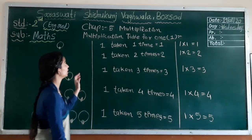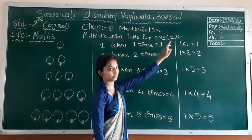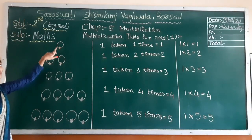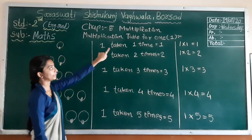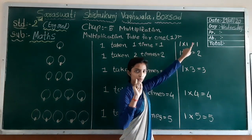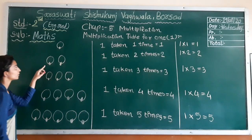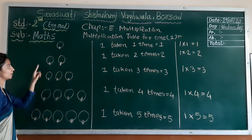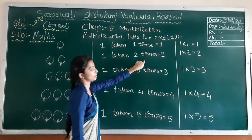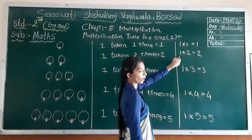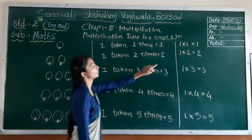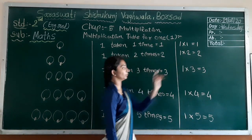Now students, we will learn the multiplication table for one. See here students, this is the table of multiplication. I have taken one object one time. One taken one time equal to one. One multiplied by one equal to one. Here I have taken one object two times — one time, two times. That means one taken two times, so equal to two. One multiplied by two equal to two.